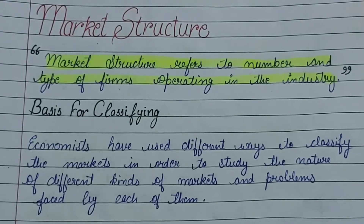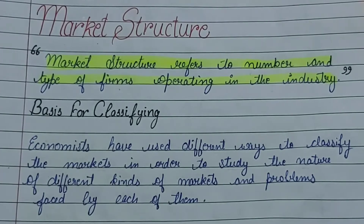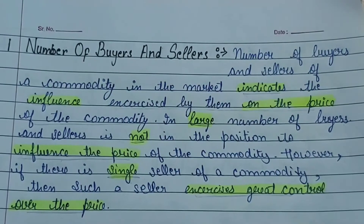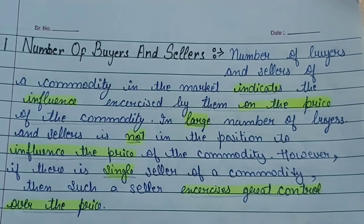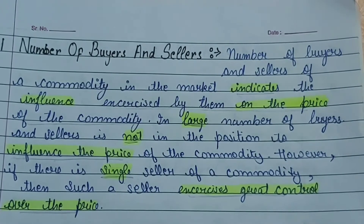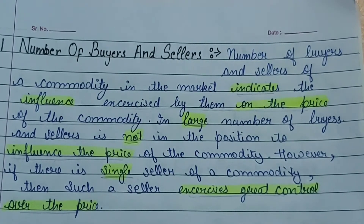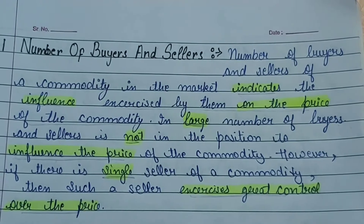हम जानेंगे कि कौन से basis हैं जिनके basis पर हम market को categorize करते हैं। First point is number of buyers and sellers. Buyers का number बड़ा depend करता है और sellers का number बड़ा depend करता है, क्योंकि इससे पता चलता है कि वो price को influence करेंगे या नहीं।